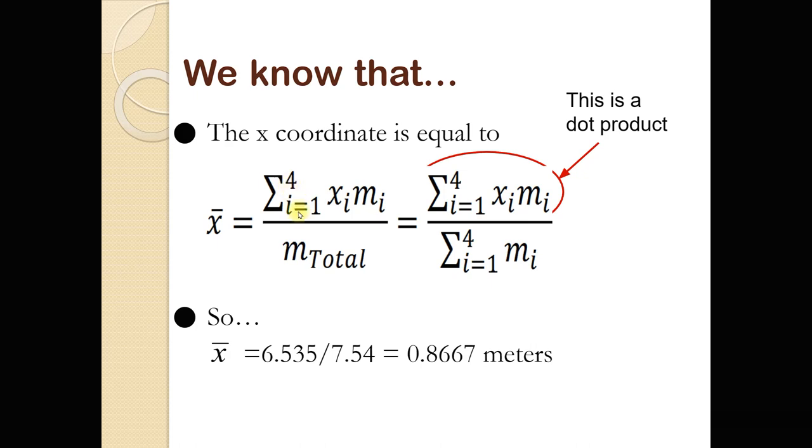So the sum of the product of that corresponding component's x coordinate times that corresponding component's mass. So x sub i, m sub i is the i-th component's x coordinate and mass. So x coordinate of item 1 times the mass of item 1 plus x coordinate of item 2 times the mass of item 2, and so on up to 4. Divided by the total mass.